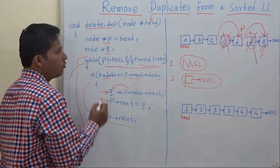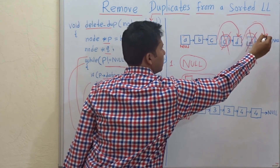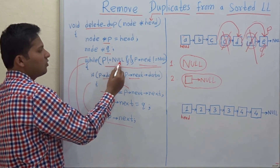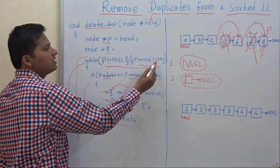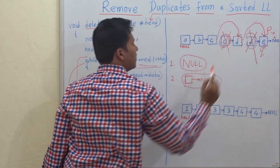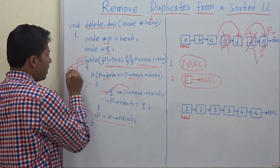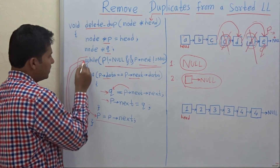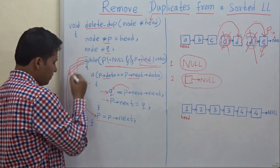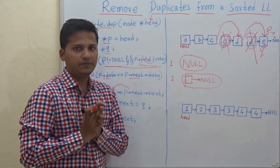P jumps to the next node and comes to E. Now in the while loop: P is not equal to null, but P->next is equal to null — so the condition is not satisfied and we come out of the while loop. This means the linked list traversal is complete.